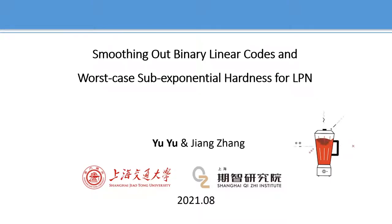I am glad to introduce our paper, Smoothing Out Binary Linear Codes and Worst-Case Sub-Exponential Hardness for LPN. This is joint work with Zhang Zhang that appears at Crypto 2021.